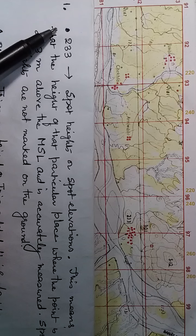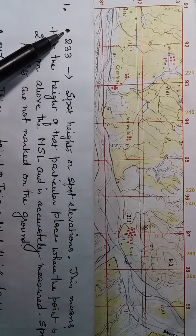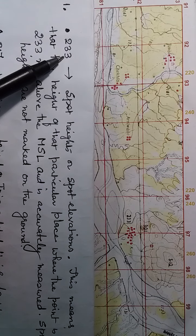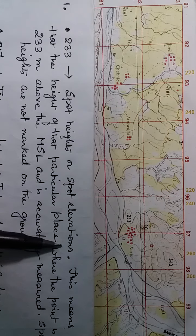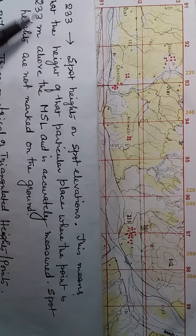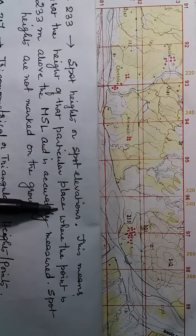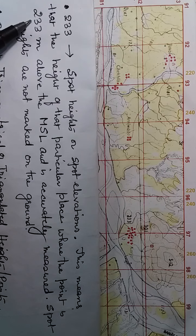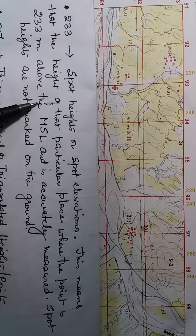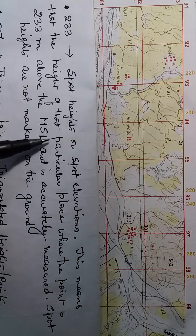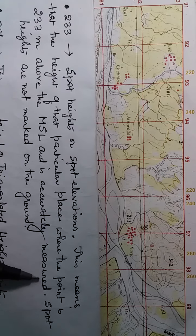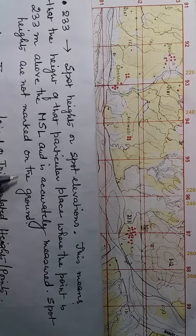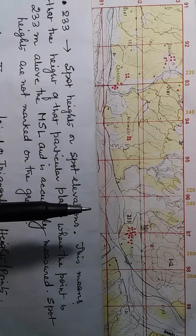Spot heights are marked on the map using a black dot and a number will be written. They are also referred to as spot elevations. The height of that particular place where the point is, is measured in meters above the mean sea level, which is the reference for measuring elevation on land. Spot heights are not marked on the ground — they are marked only on the map.